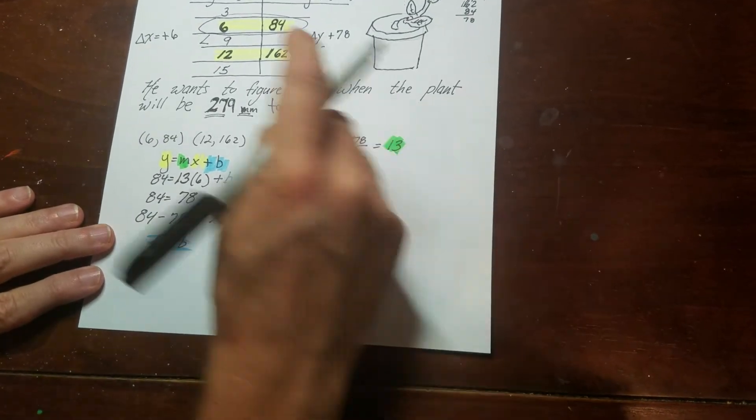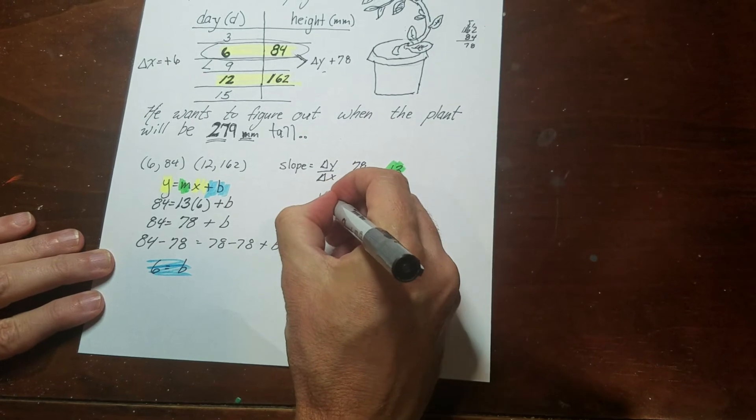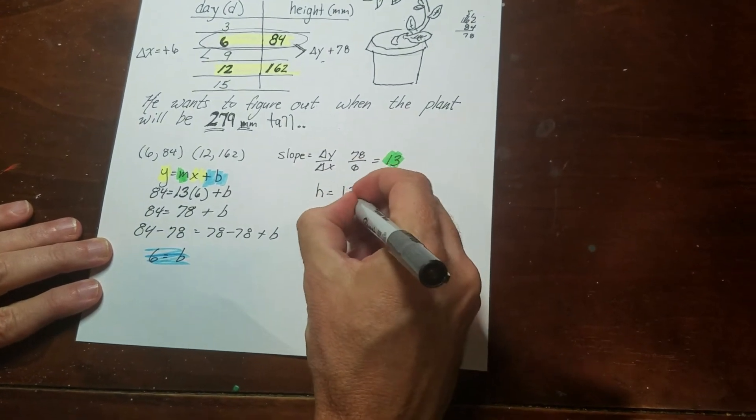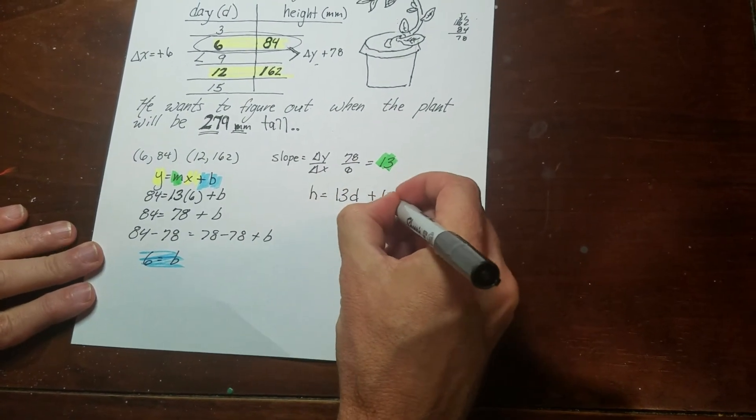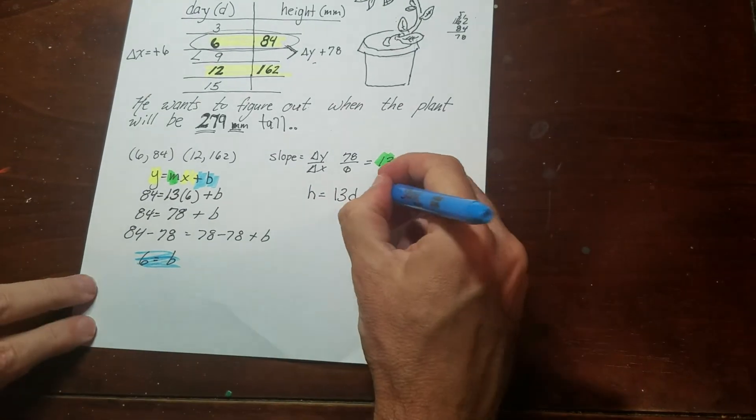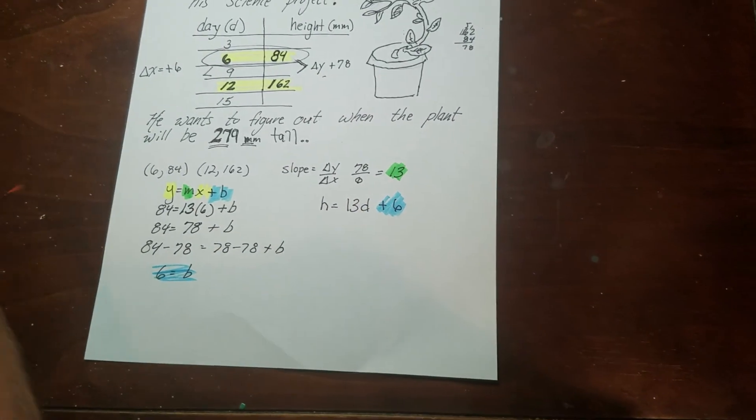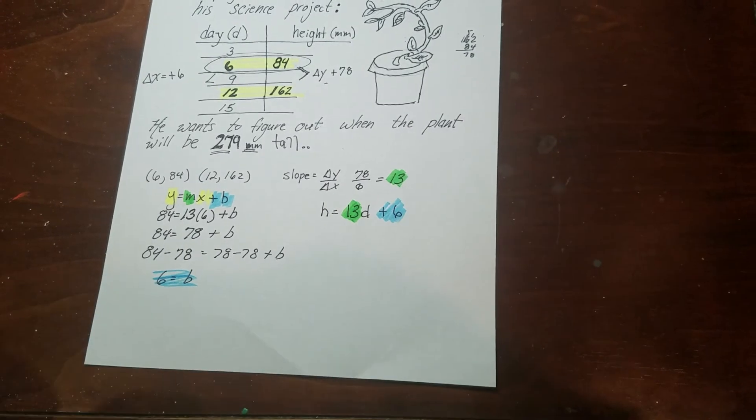So now that I've got that rule, I can do anything I need to. So the relationship between the day and the height. So the height would be equal to 13 times the day plus 6. So you can kind of see with color here where everything goes. So that's my rule.